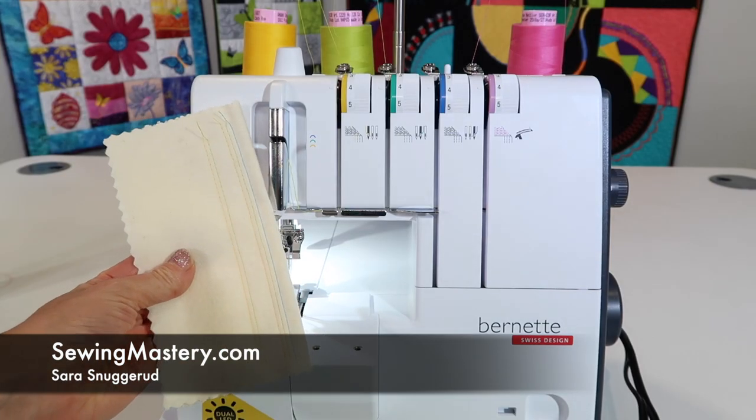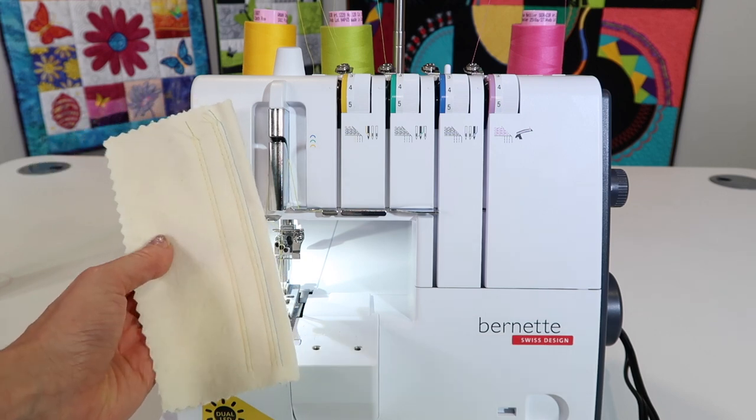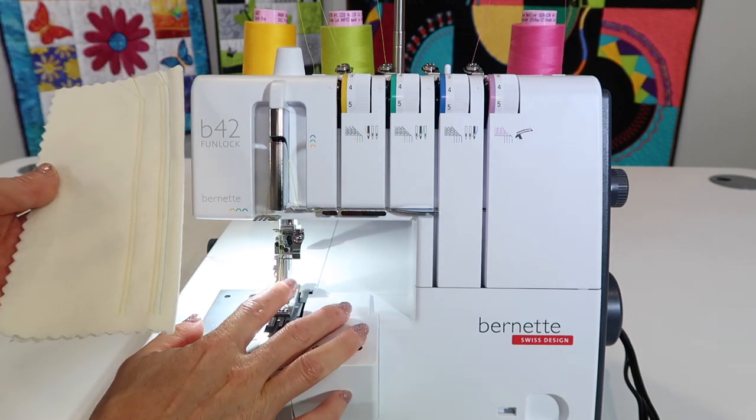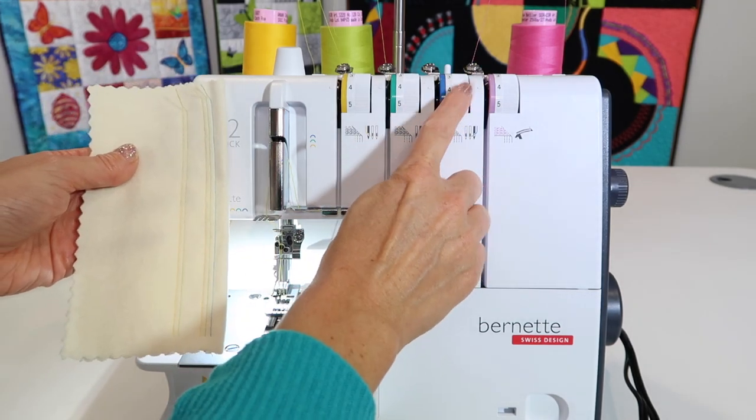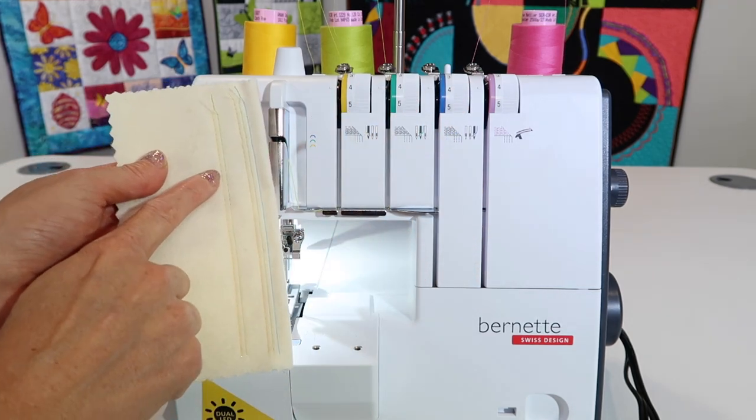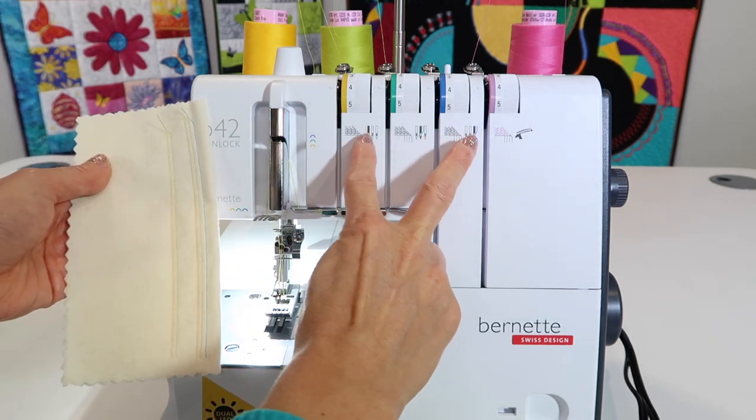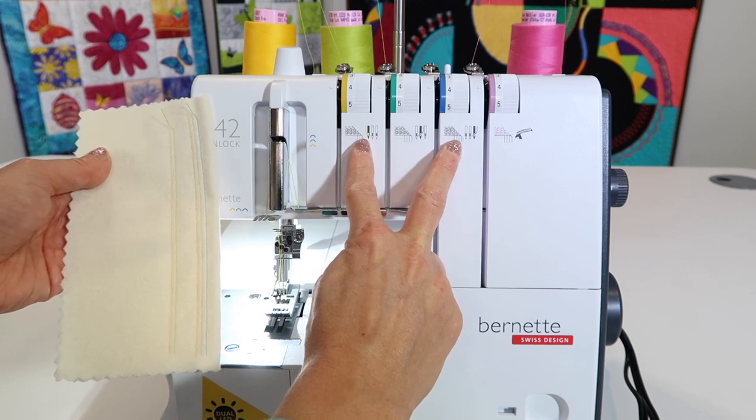We're working through all four stitches on the Bernett Fun Lock B42 cover stitch and chain stitch machine. We've done all three needles and four threads. We took out the right needle for a narrow version of a two needle cover stitch, and now I'm going to put the needle back in to get the wide version of the two needle cover stitch.